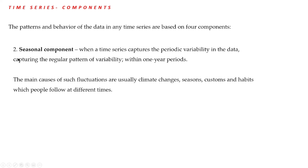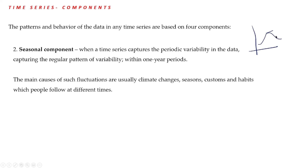The next component is the seasonal component. When the time series captures the periodic variability in the data within one-year periods, that component is called the seasonal component. For example, the sales of ice creams and soft drinks will be very high during summer — the graph will be low and reach a maximum in summer. The main causes of such fluctuations are usually climate changes, seasons, and customs and habits which people follow at different times. That component is called the seasonal component, denoted by S.